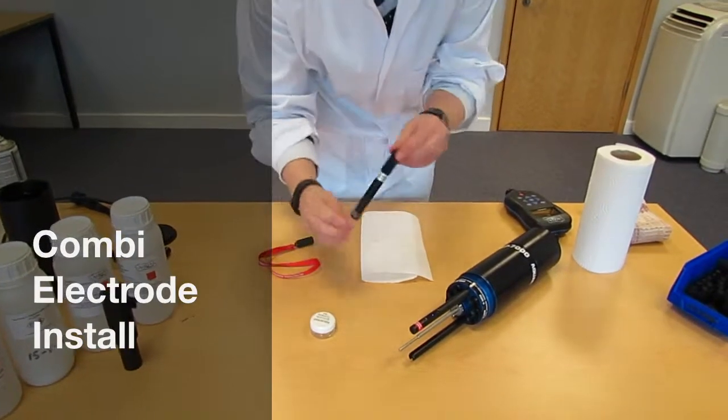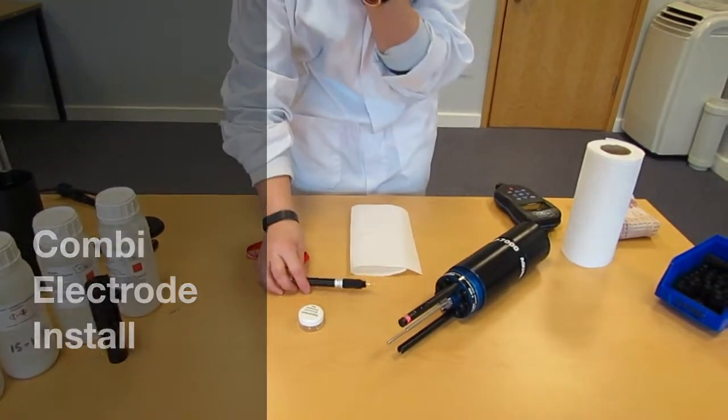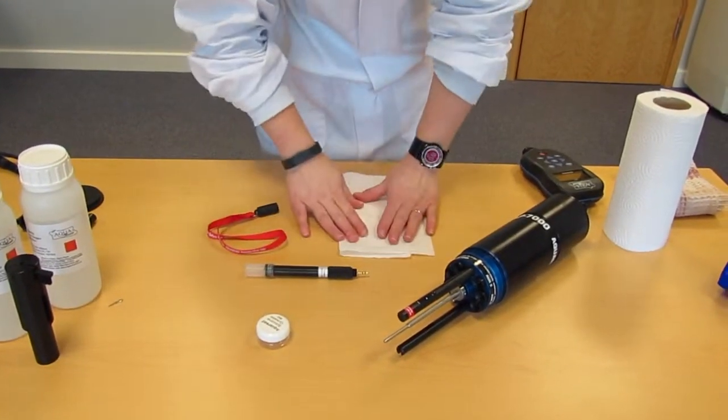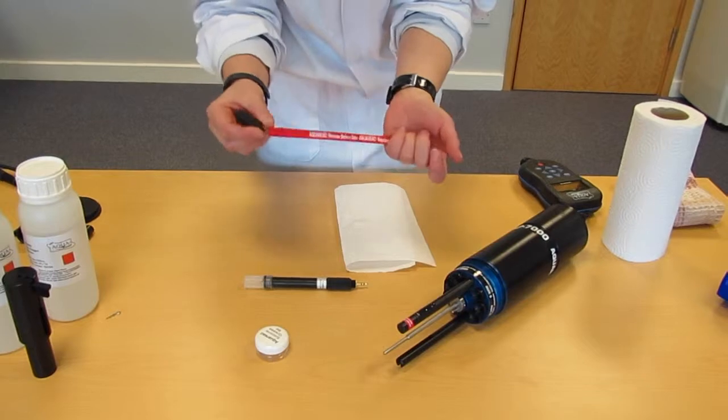So the first thing I'm going to do is install the combi electrode into the AP7000. Now for this we're going to require some silicon grease, a piece of tissue, and the pH cap.